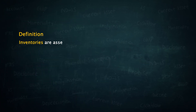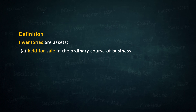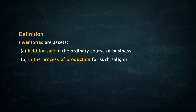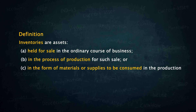Inventories are assets held for sale in the ordinary course of business — basically like finished goods. Held in the process of production for such sale — something like work in progress. Or in the form of materials or supplies to be consumed in the production process or in the rendering of services.